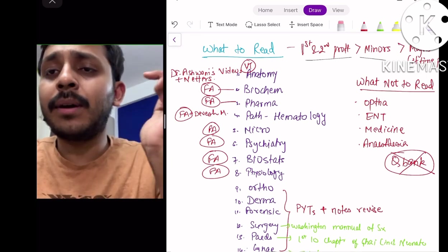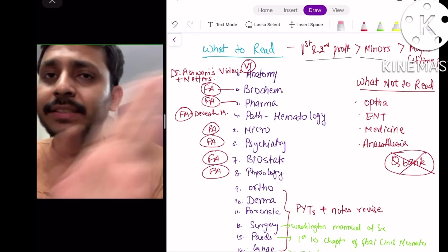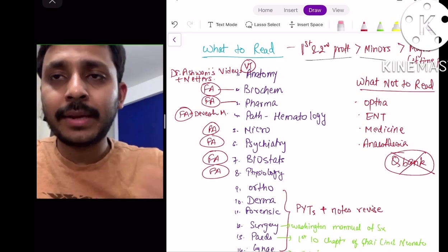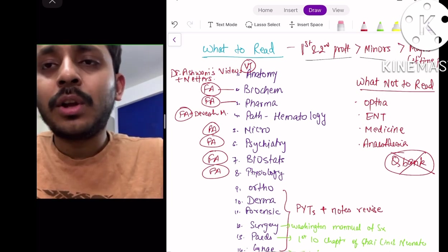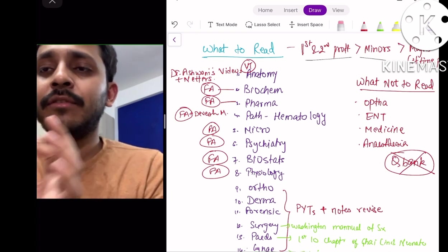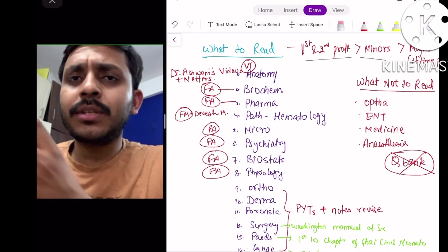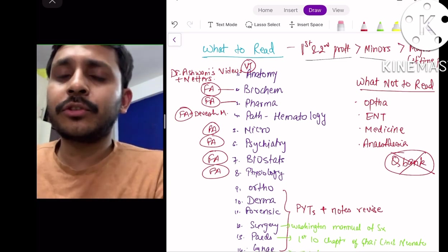For pharma, micro, psychiatry, biostat, physiology, I think First Aid should suffice in its entirety if you just have two months of preparation. For pathology, just read First Aid and Devesh Mishra just for hematology. Hematology is the most important topic in pathology apart from general path, but just focus on pathology now.